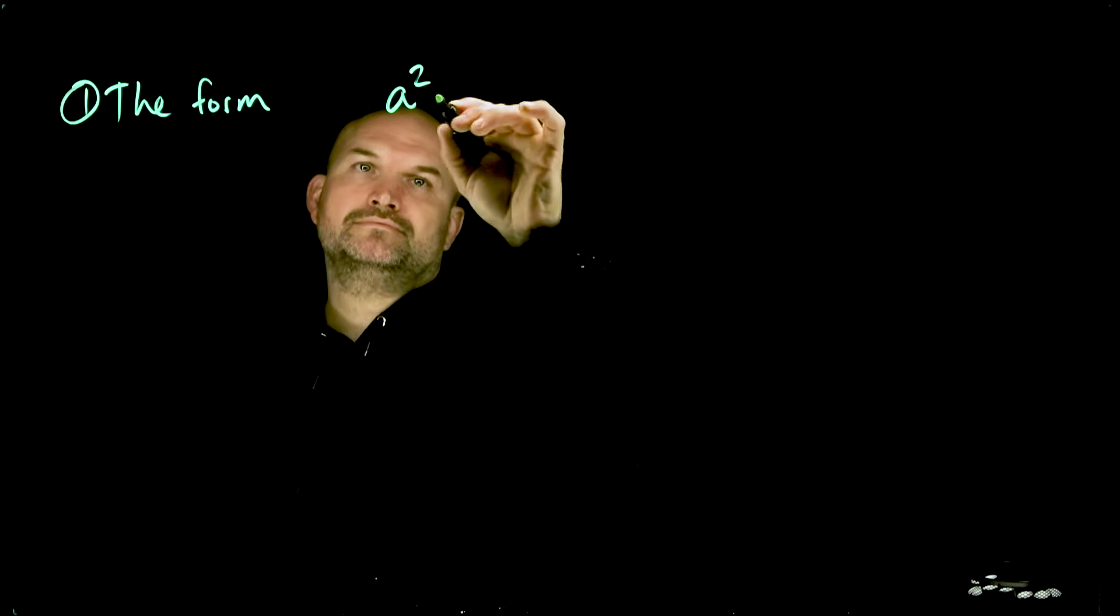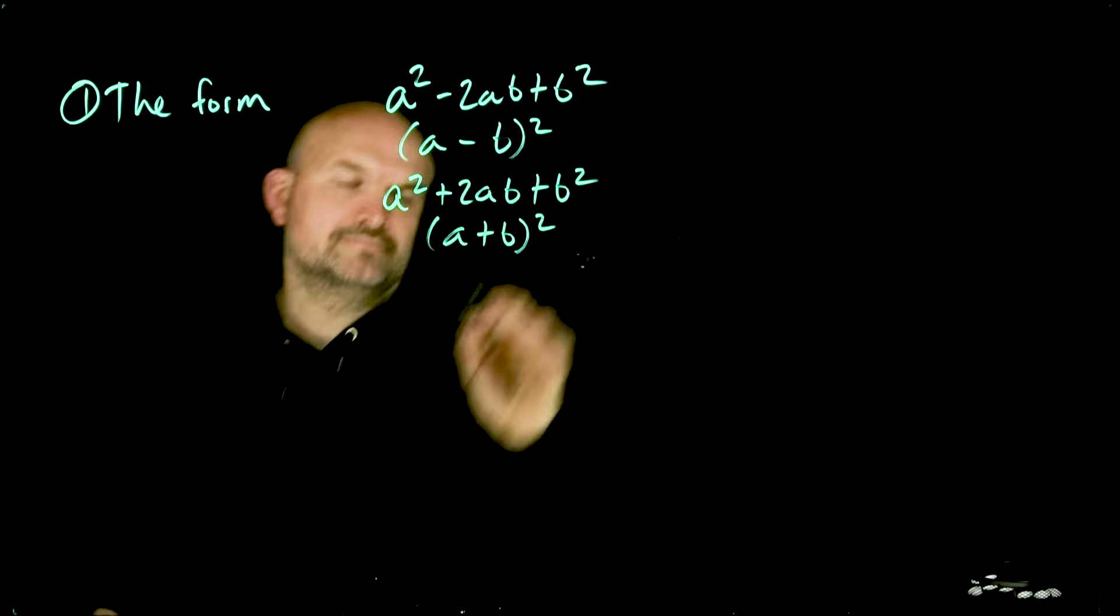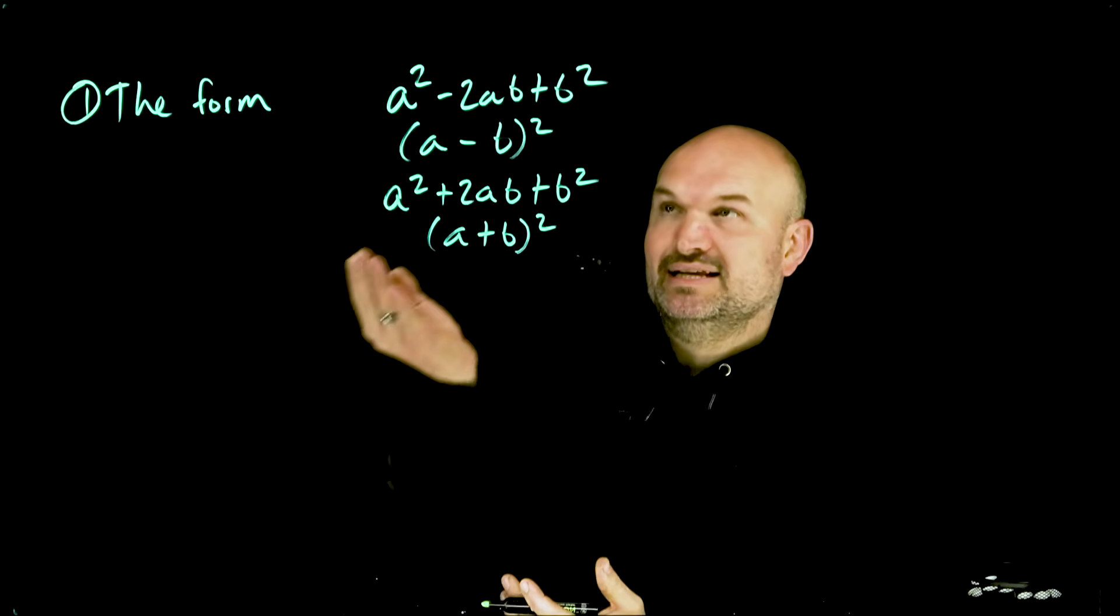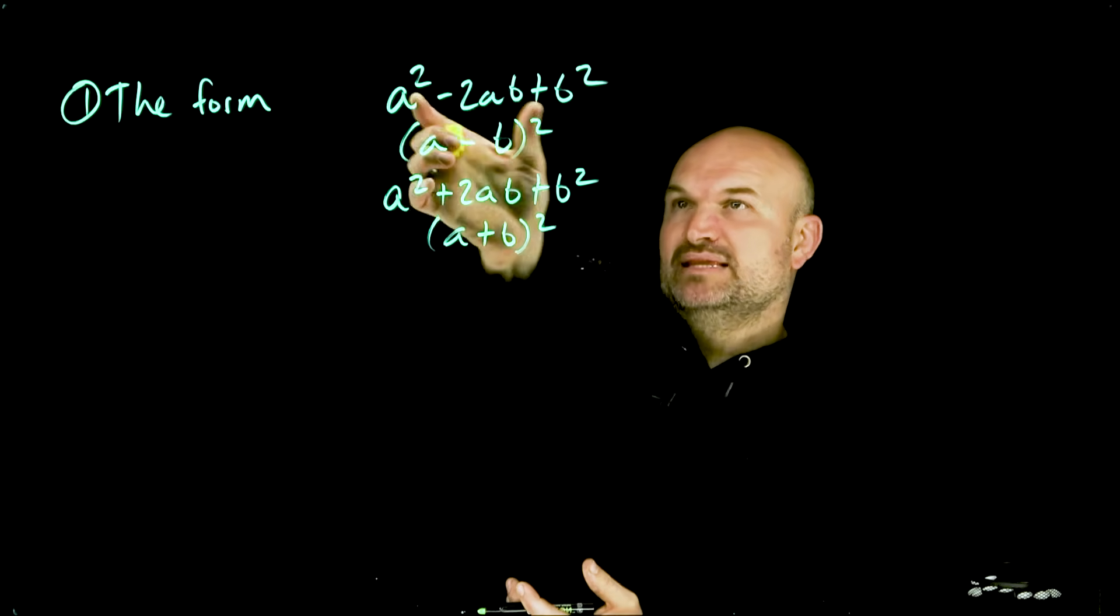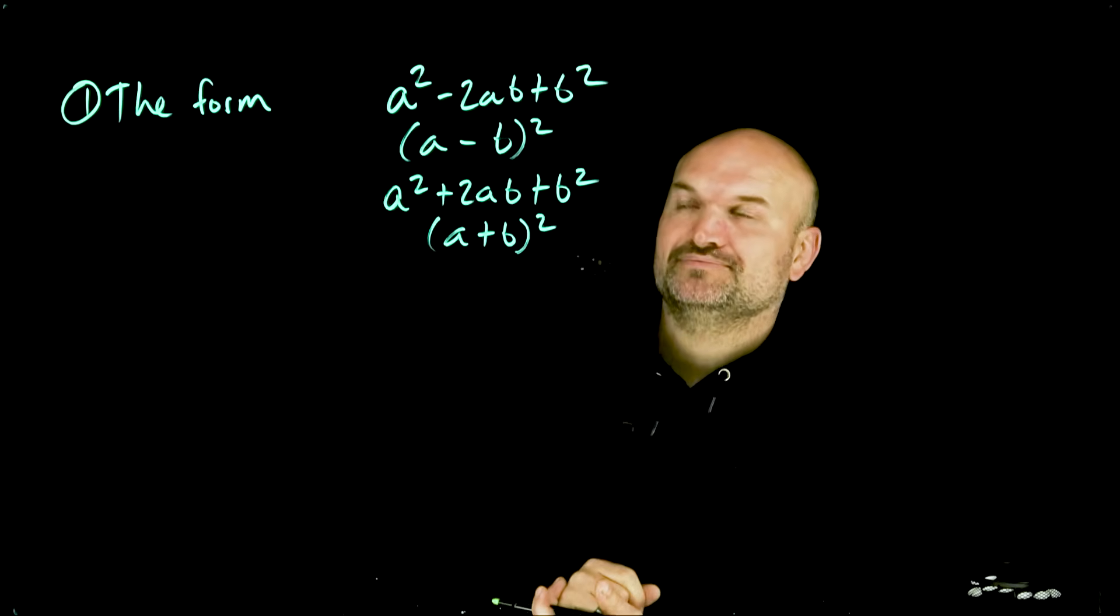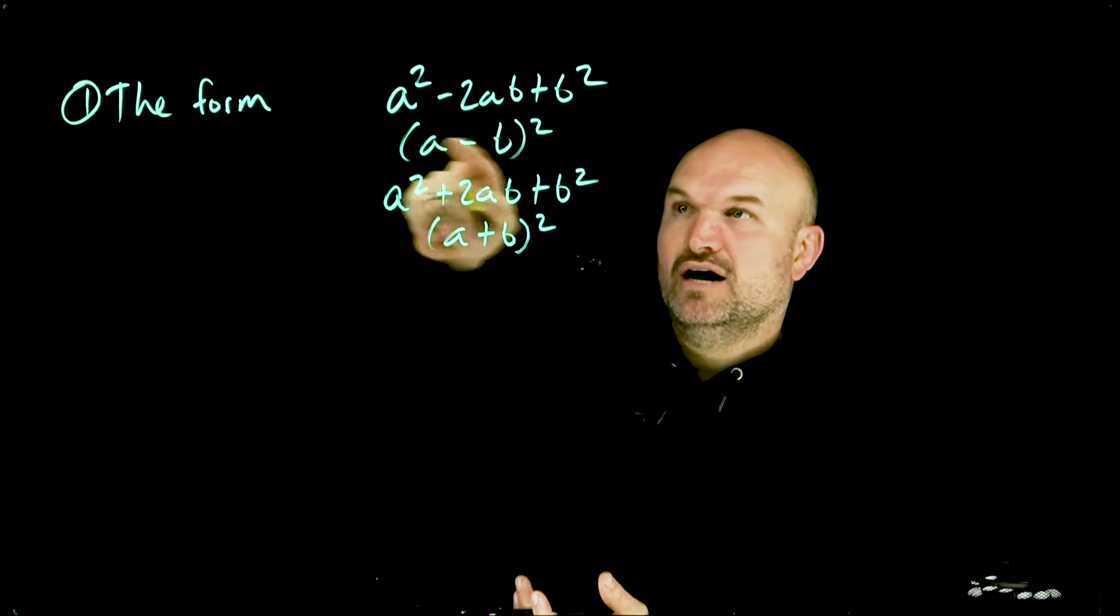So the first thing that you need to know about factoring perfect square trinomials is what exactly is the form. When we're looking into factoring perfect square trinomials, we're going to have something in the form of a squared and b squared, and then your middle term is going to be the product of those two times two. Now if you have something in that form, then we know we can simply factor it down into a binomial squared of a minus b squared.